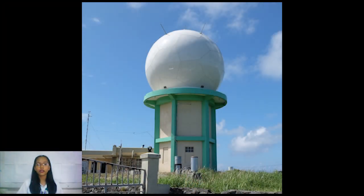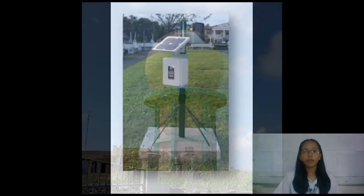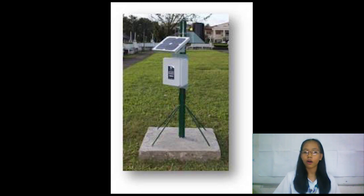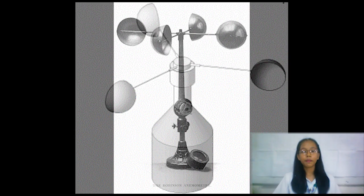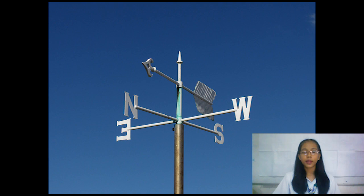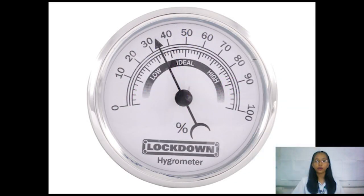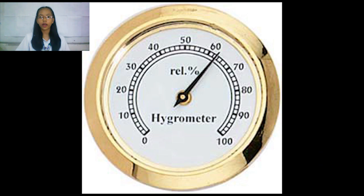PAGASA uses weather instruments such as Doppler weather radars installed in strategic places in the Philippines to monitor the typhoon and its movement, the amount of rainfall, and daily atmospheric forecasts. There is also an automated rain gauge that monitors excess rainfall and provides warning signals. They also use basic weather instruments such as a barometer, which measures air pressure; an anemometer, which measures wind speed; a wind vane, which determines the direction of the wind; and a hygrometer, which measures the water vapor content of air, or humidity.